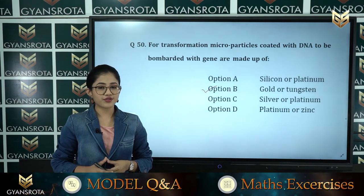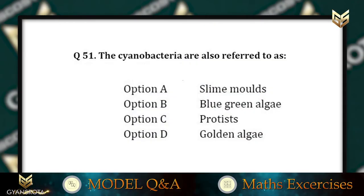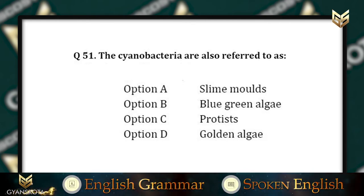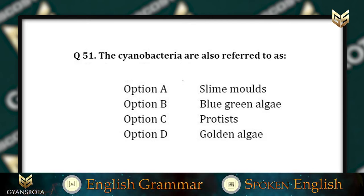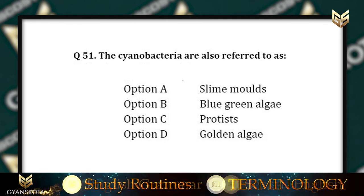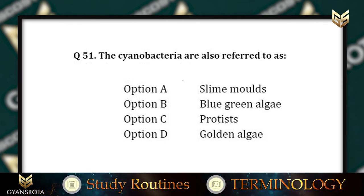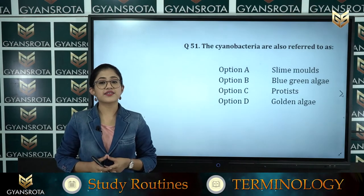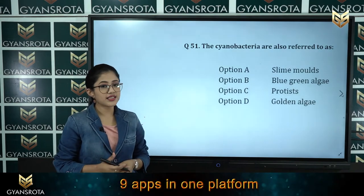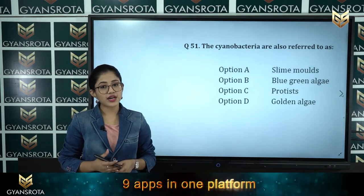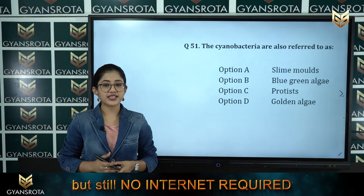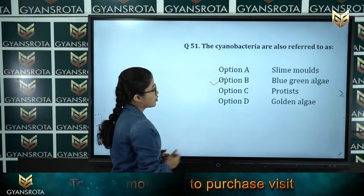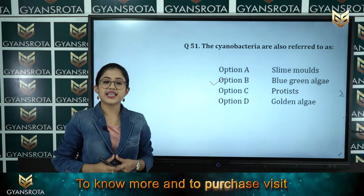Question 51: Cyanobacteria are also referred to as option A: Slime mold, option B: Blue-green algae, option C: Protista, option D: Golden algae. The correct answer is option B, Blue-green algae.